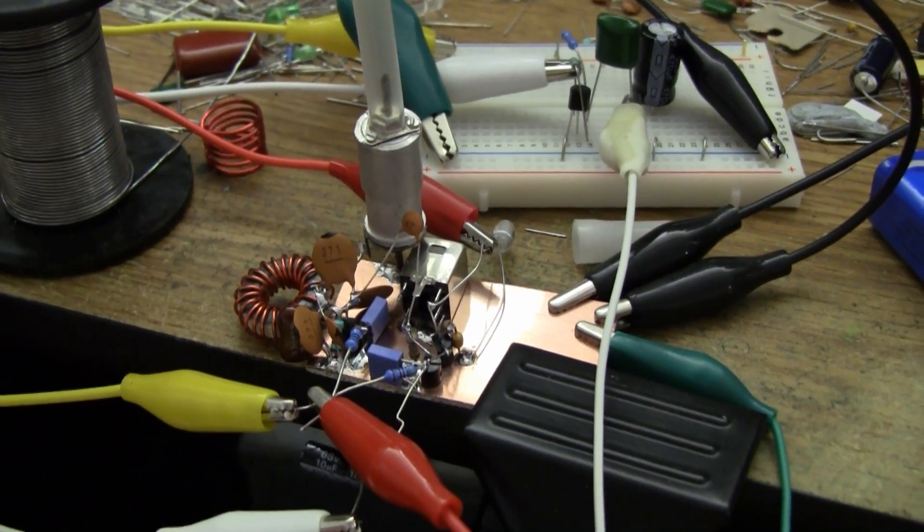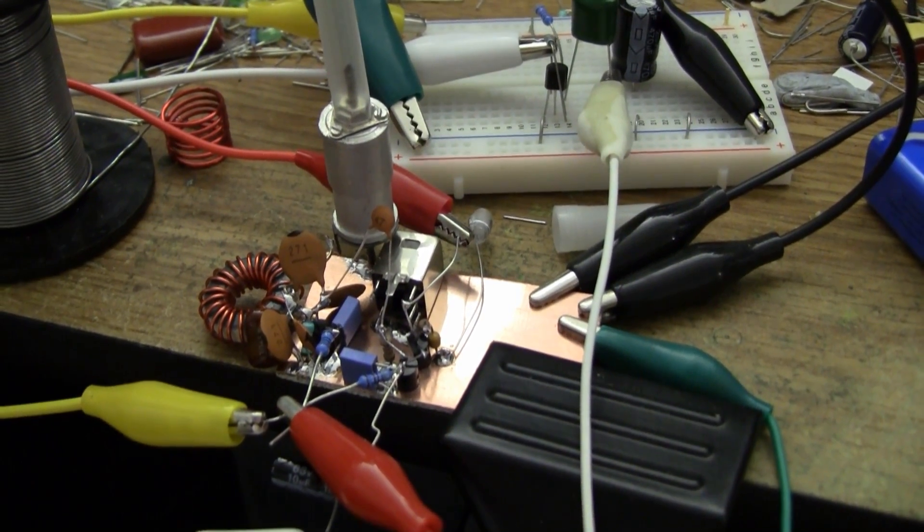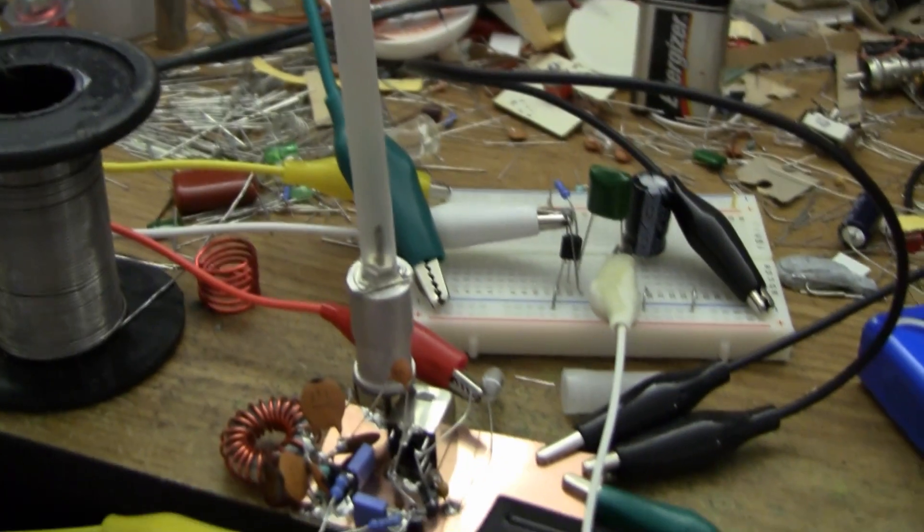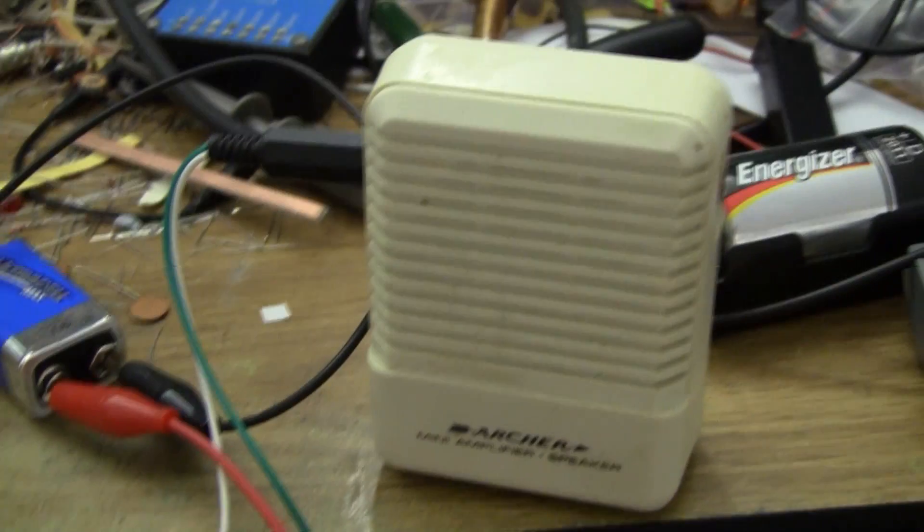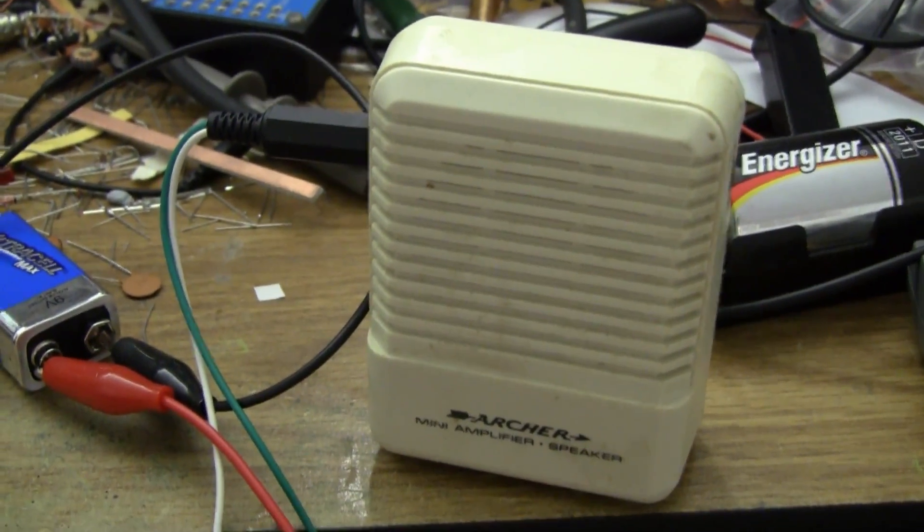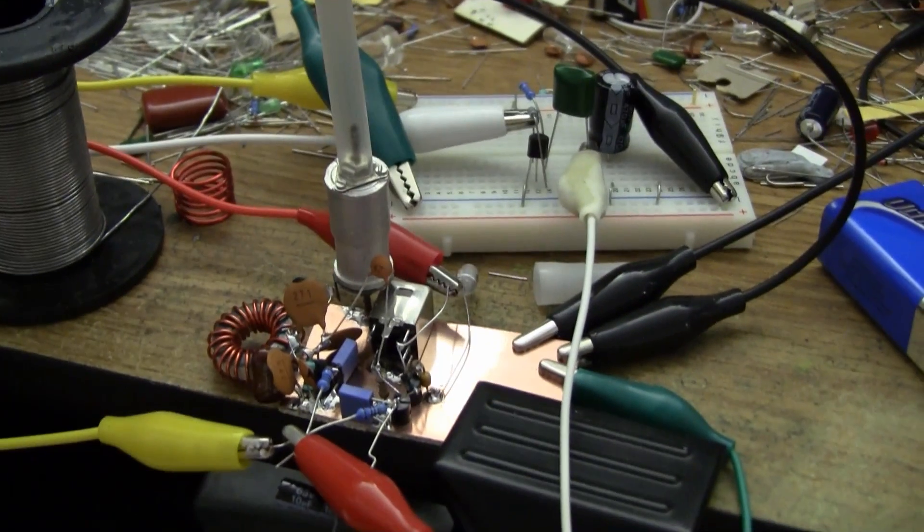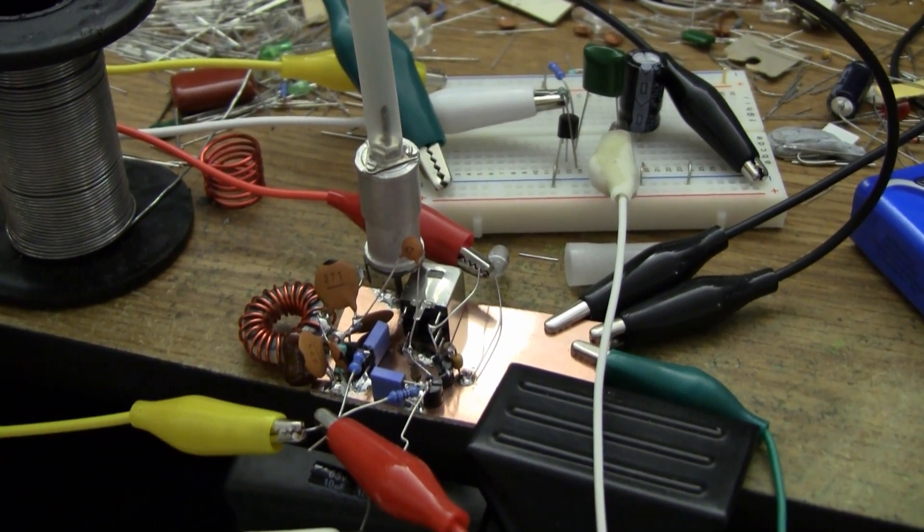You can see here it's an oscillator and a mixer, a bit of a front-end filter. The audio amp is still in pieces and I'm using an Archer Amplified speaker for now, but I'll shortly build a real audio stage for it.